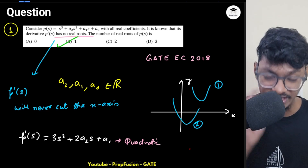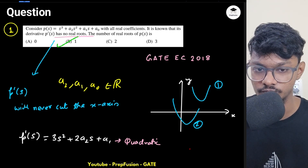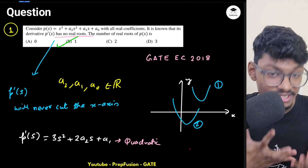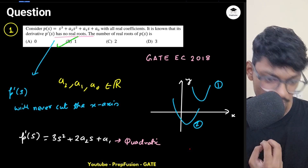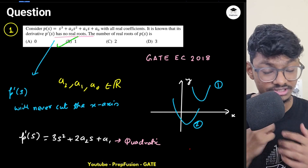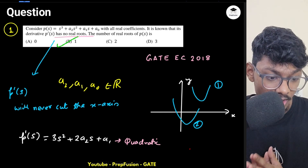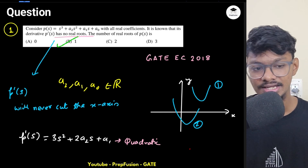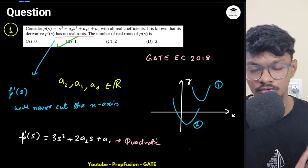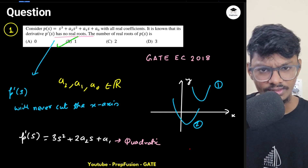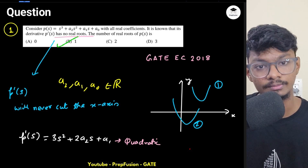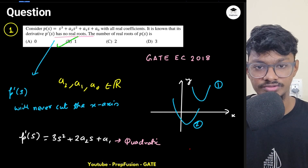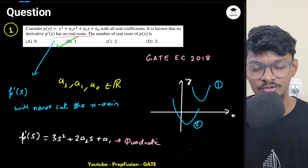So the answer is option B. This is a very elegant question — a mathematics question, not a control systems question. If you are strong in basics you can solve it. This is an analytical question where you have to think about how to proceed. I hope you enjoyed it. If you want to study with us, we have EMFT, mathematics, analog, network, and control videos on our YouTube channel, and full courses for GATE 2026 at prefvision.net. Happy learning!